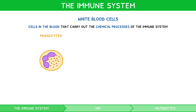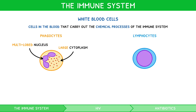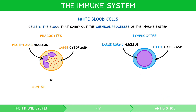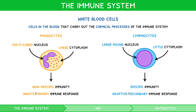Phagocytes are large cells with a large cytoplasm and a multi-lobed nucleus. Lymphocytes are large cells with a large round nucleus and little cytoplasm; they can be either B or T cells. White blood cells carry out two processes known as the non-specific and specific immune responses, also referred to as the innate or primary and adaptive or secondary immune responses, respectively.